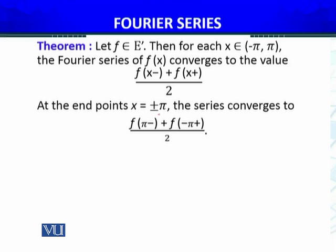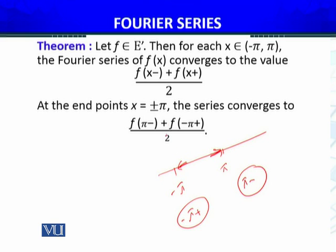At the end points, X equals plus or minus pi, the series converges to F(π⁻) because at π, we can only move from the left side — that is the negative side of π. Similarly, at minus pi, we can only move from the right side — the positive side. That's why at the end points, since we have no information about the function outside the interval, the series converges to those one-sided limits.